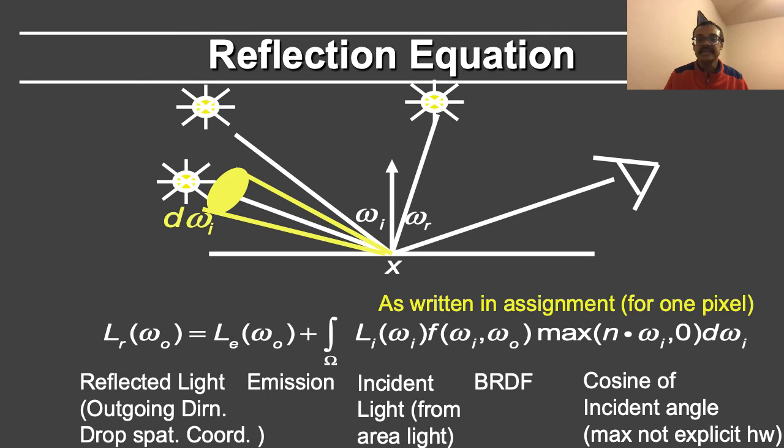In the homework assignment, for simplicity, we have focused on one spatial location or one pixel. In this case, we can drop the spatial coordinate and write the reflection equation only in terms of angular directions for a single spatial point or pixel. The reflected light is equal to the emission plus the integral of the incident light from the area light source, the BRDF, and the cosine of the incident angle.